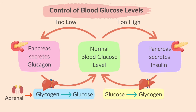Adrenaline also plays a role in increasing blood glucose concentration during a fight-or-flight response. Adrenaline is released and it stimulates the liver to break down glycogen into glucose, increasing the blood glucose concentration. This provides energy for the body to use in the fight-or-flight response. So adrenaline also speeds up the conversion of glycogen to glucose in a fight-or-flight situation.